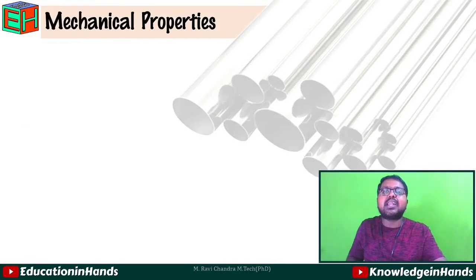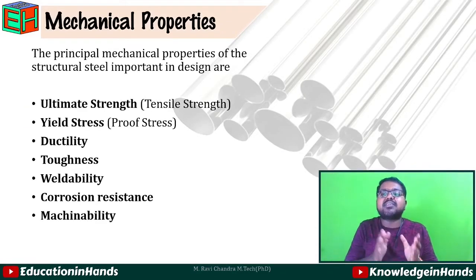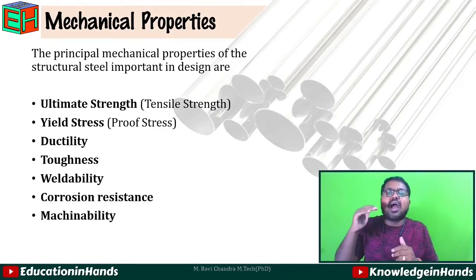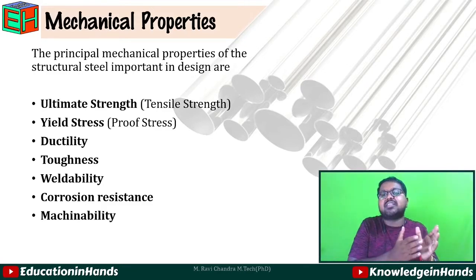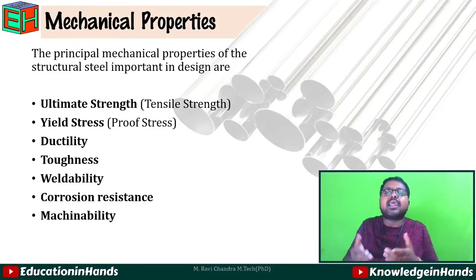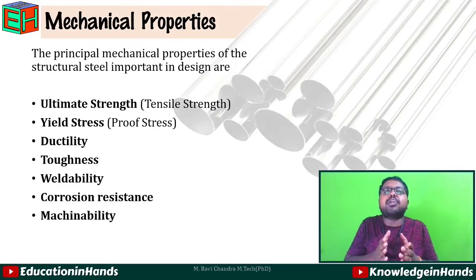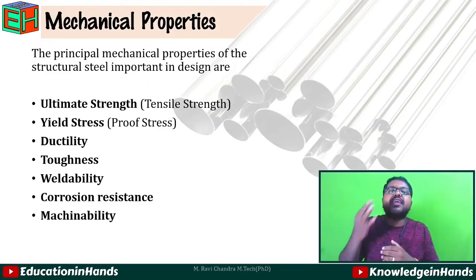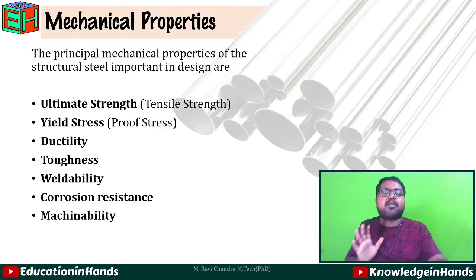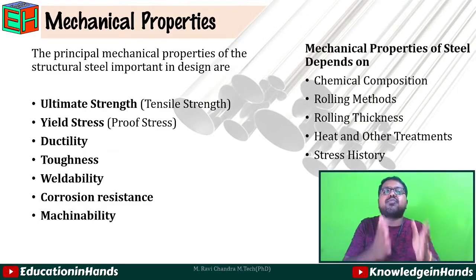Next, the principal mechanical properties of structural steel important in design are: ultimate strength or maximum tensile strength, yield stress or proof stress, ductility (which is an important property of steel), toughness (how much energy it absorbs), weldability (how well the material can be welded), corrosion resistance (how well the member resists corrosion), and machinability (how well it can be modified into the required shape). All these mechanical properties mainly depend on certain characteristics.